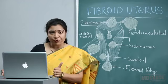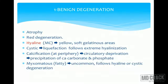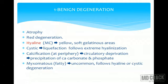Benign degenerations include: atrophy; red degeneration; hyaline degeneration — the most common, where yellow soft gelatinous areas are formed; cystic degeneration — liquefaction following extreme hyalinization; calcification — usually at the periphery due to circulatory deprivation and precipitation of calcium carbonate and phosphate (calcification is always outside, degeneration is inside); and myxomatous/fatty change — uncommon, follows hyaline or cystic degeneration.